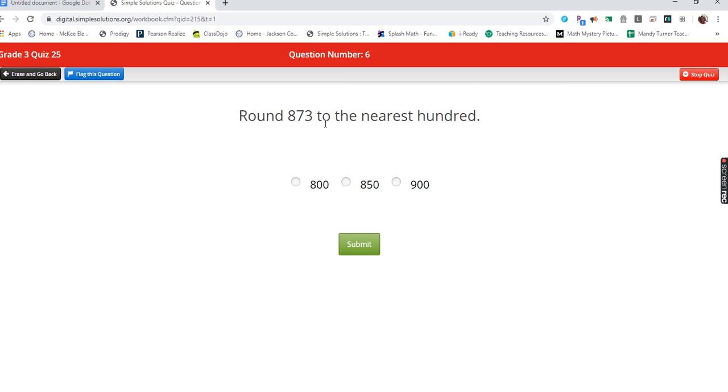Round 873 to the nearest hundred. Find the place, look next door. Five or more, you raise the score. So what I'm going to do is the seven is going to make that eight turn into a nine.